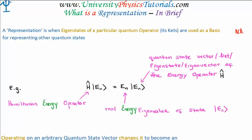So let's make a definition. A representation is when eigenstates of a particular quantum operator — its kets — are used as a basis for representing other quantum states. The idea of basis states shouldn't be new to you. If you're talking about positions in space, you can use your rectangular coordinate system, your spherical coordinate system, or your cylindrical coordinate system as a basis for your space. In the same way, mathematically, we can use various different eigenstates of operators as a basis to discuss other states. So remember: eigenstates — we can read that as kets, eigenvectors, eigenkets, and so on.